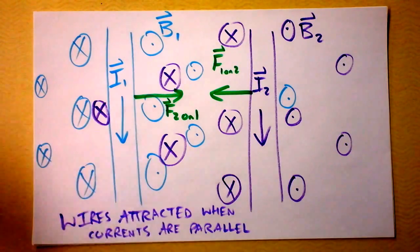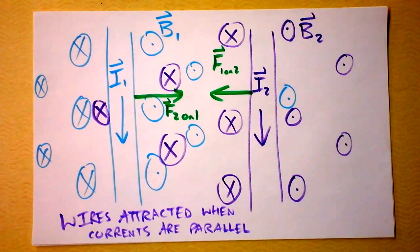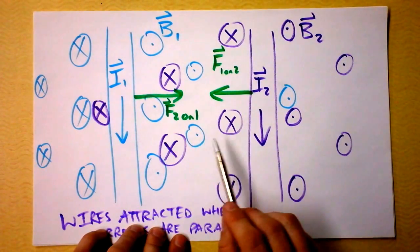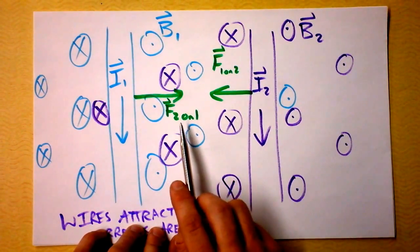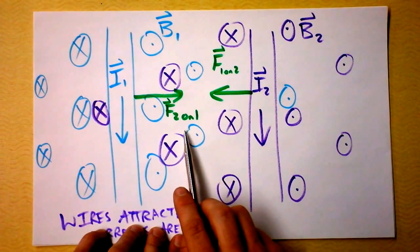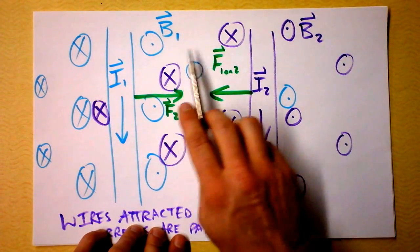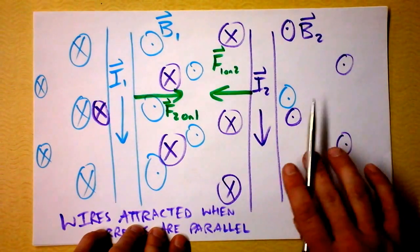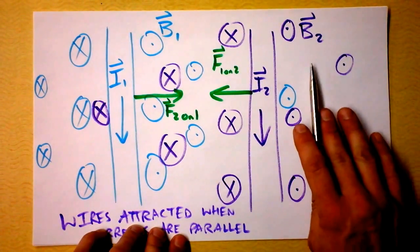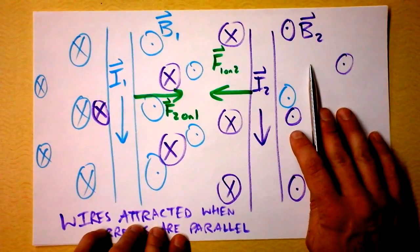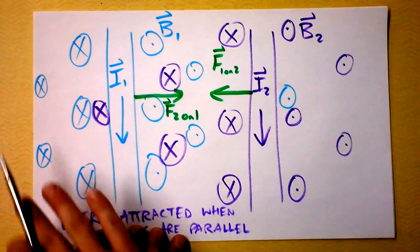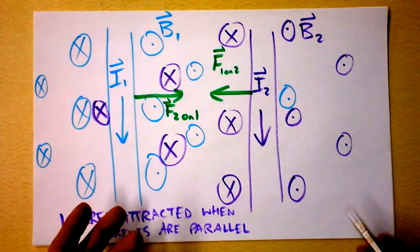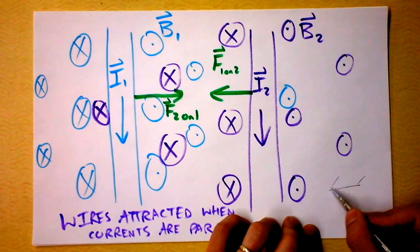One more thing before we close this out. I want to point out this. In the region in between the two wires, the magnetic field from one is the opposite direction of the magnetic field from the other one. Do you see that? So, the magnetic field is sort of canceling out in here. Outside, though, the magnetic field from wire 1 is the same as the magnetic field from the other wire. And so, you've got a big magnetic field over here, and you've got a big magnetic field over here.